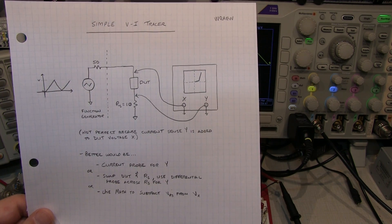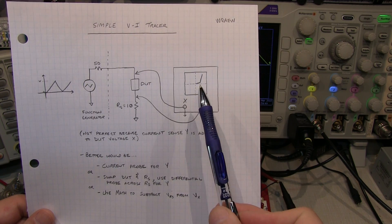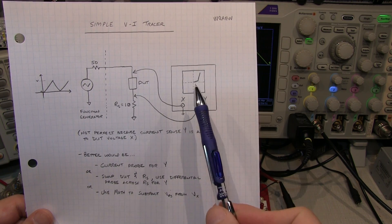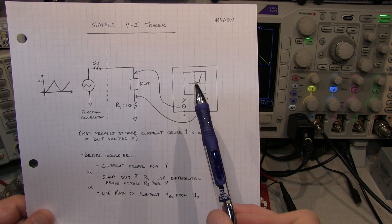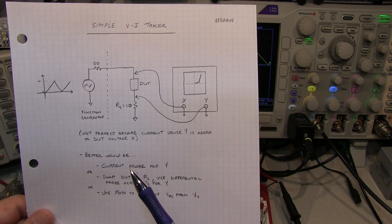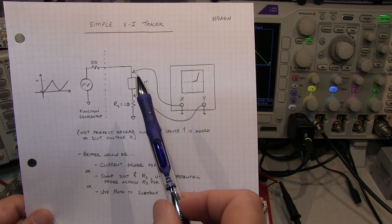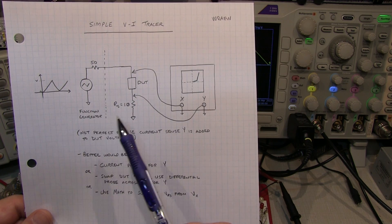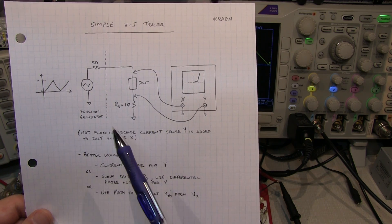The idea here is we want to basically plot out the voltage and current relationship of a device under test. I'm showing a diode characteristic here, and the way we're doing that is essentially measuring the voltage at the top of the DUT and the voltage across a current sense resistor.